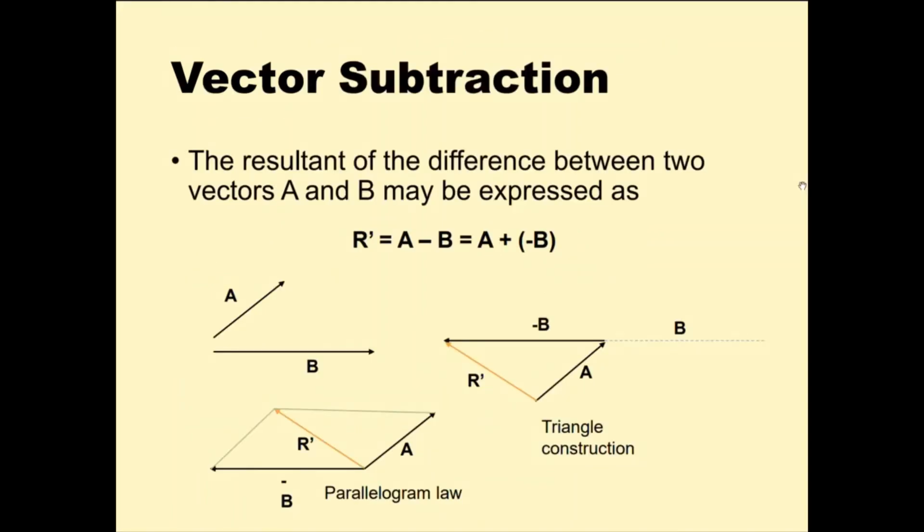When subtracting vectors, it's the same except the direction changes. As you can see here, we get a smaller R when B was subtracted from vector A. Unlike when we add them, this is the direction of vector B, and we get a larger resultant.